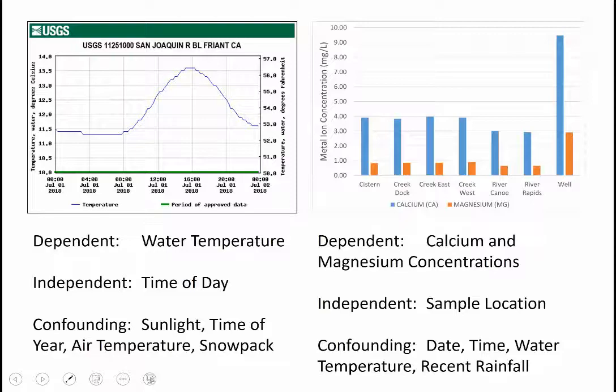There's a lot of variables that could have affected these metal ion concentrations. What day it was collected, so time of year. What time of day has the potential to affect it, particularly for the well, if it's recently pumped or if it's been accumulating for a while. Water temperature can affect solubility of metal ions. And if there's been a lot of recent rainfall, you might expect the metal ions that mostly come out of the soil to be lower because the water is moving more quickly through the river.